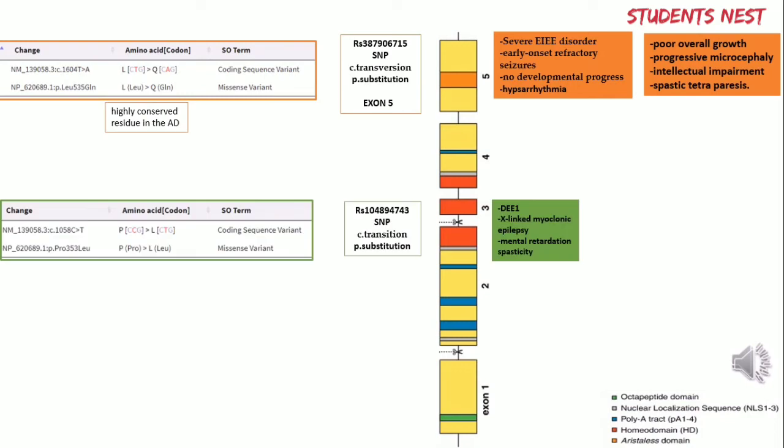The second SNP, RS104894743, is also a missense variant resulting from a transition mutation in the ARX gene. It was observed in six males from an Australian family who had a severe form of the disease termed X-linked myoclonal epilepsy with mental retardation and spasticity. The patients had onset of seizures between 2 and 18 months of age.